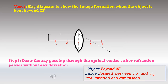Step 3: Draw another ray passing through the optical centre, which passes without any deviation. These two refracted rays intersect between F2 and C2, where the image is formed. The intersecting point is below the principal axis, so we get an inverted, diminished image between F2 and C2.